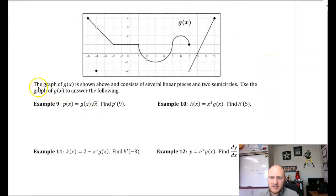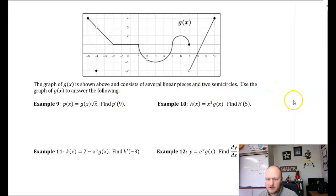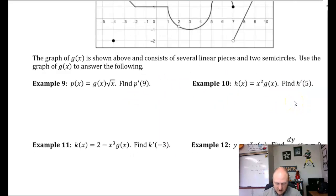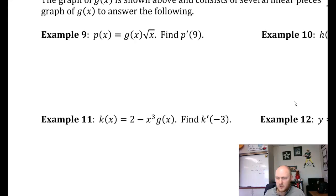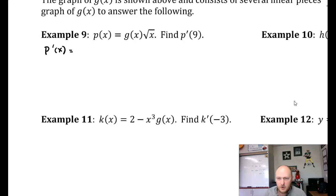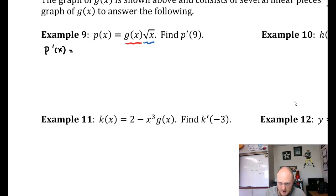This example says the graph of g of x is shown above and consists of several linear pieces and two semicircles. Use the graph of g of x to answer the following. Example 9: p of x is equal to g of x times the square root of x, and they want us to find p prime of 9. In order to find p prime of 9, I need to know what p prime of x is, so I'm going to take the derivative of g of x and square root of x — I'll have to use the product rule.